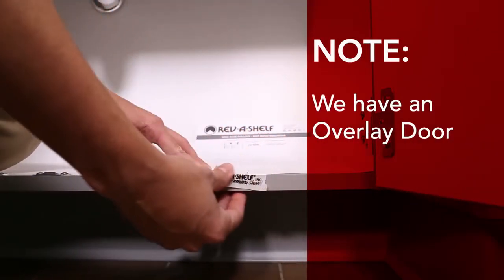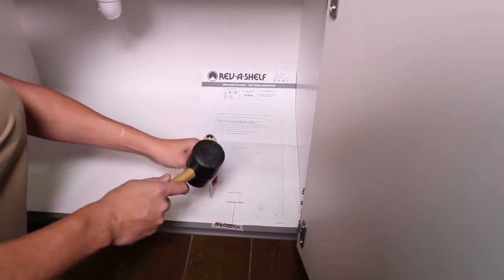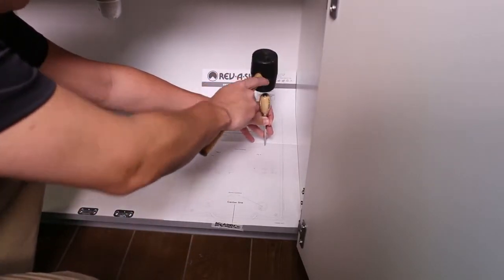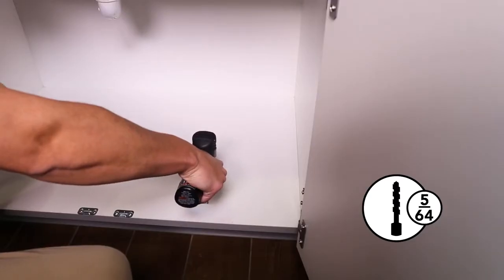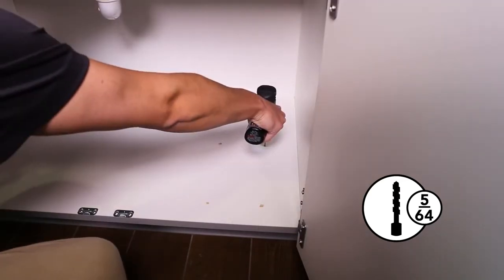Use tape to secure. Use a rubber mallet and awl to mark the 4 screw locations and remove the template. Pre-drill the 4 holes at the screw locations with the 5/64th inch bit.